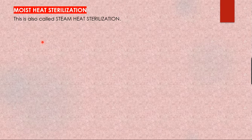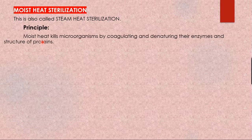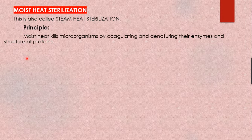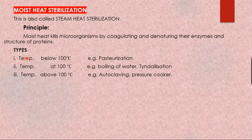Moist heat has a higher penetrating capacity compared to dry heat, which is why it has more impact on damaging cells. Heat in the form of saturated steam under pressure is the most practical method of sterilization, with the best example being the autoclave. Moist heat kills microorganisms by coagulating and denaturing their enzymes and protein structures. Now let's look at the various methods of moist heat sterilization.